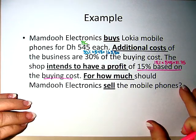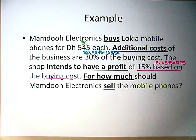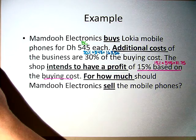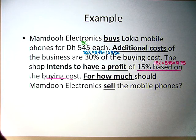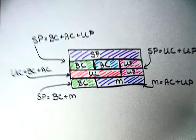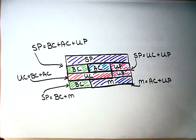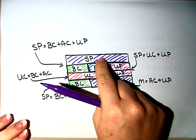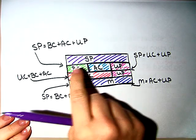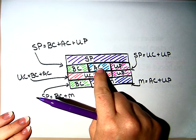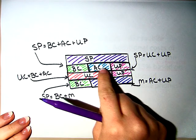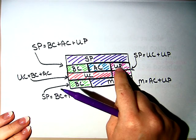For how much should Mahmood Electronics sell the mobile phones? We're going to bring back this other example that we did earlier. We know that the selling price is made up of the buying cost plus the additional cost plus the unit profit.